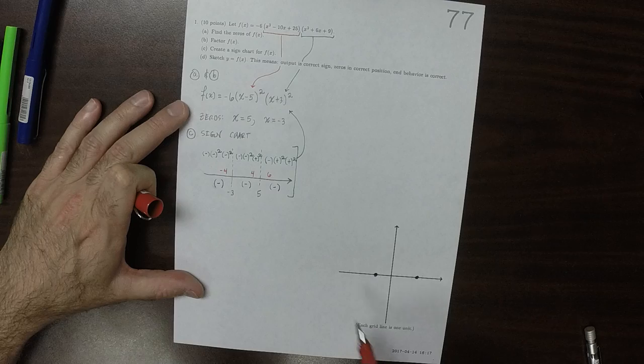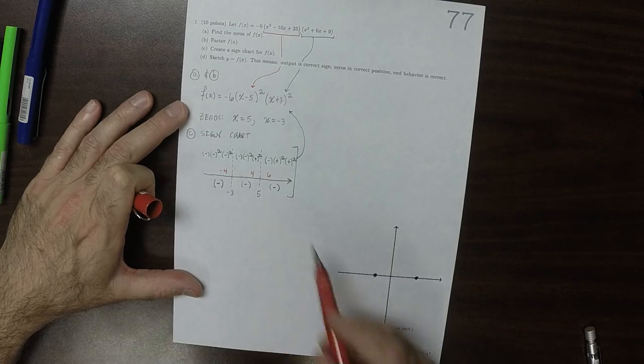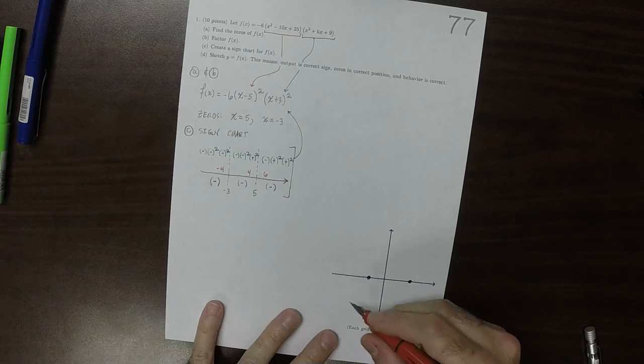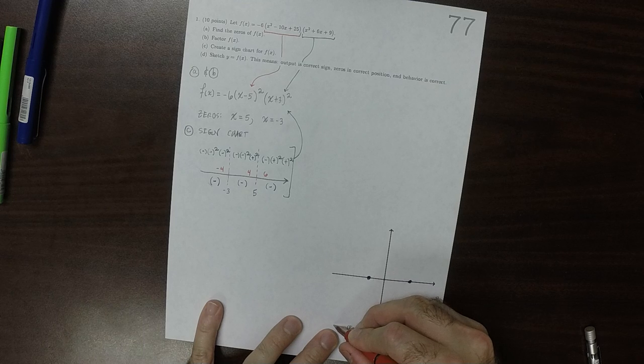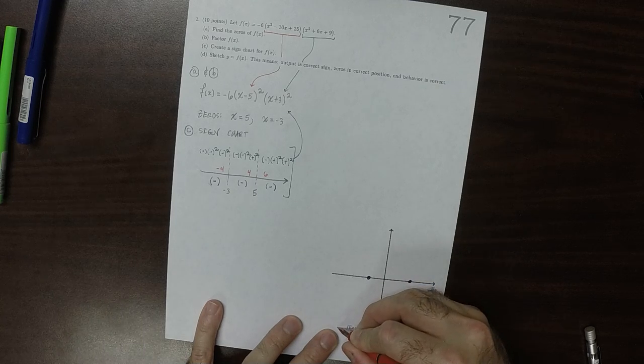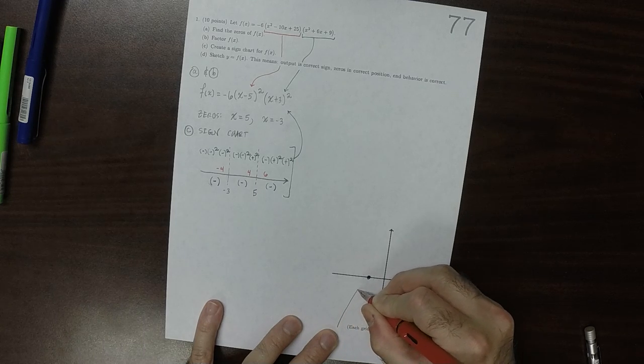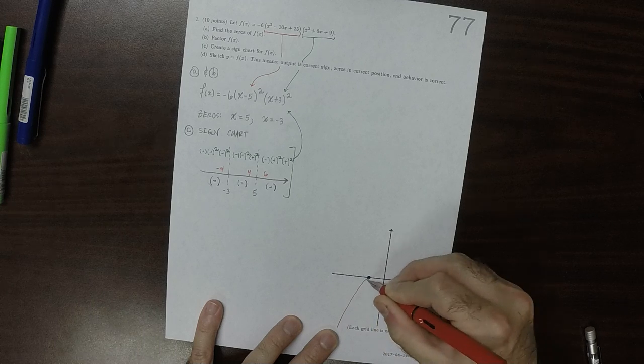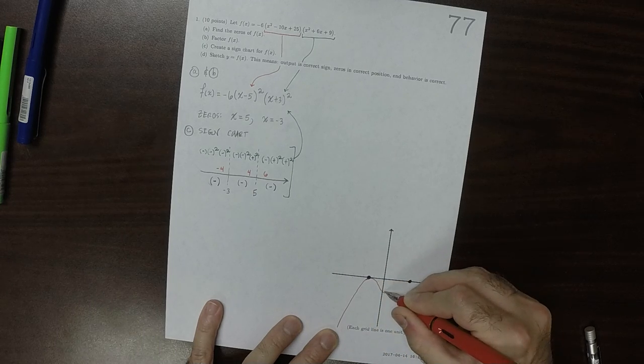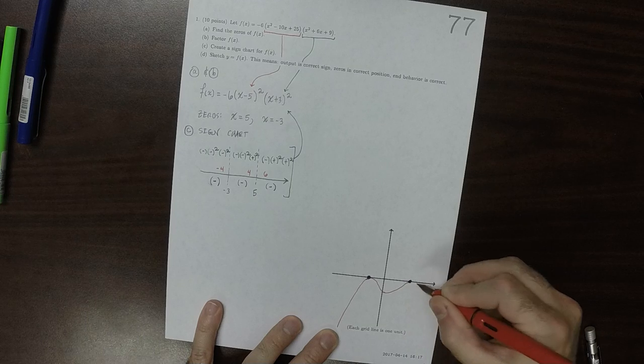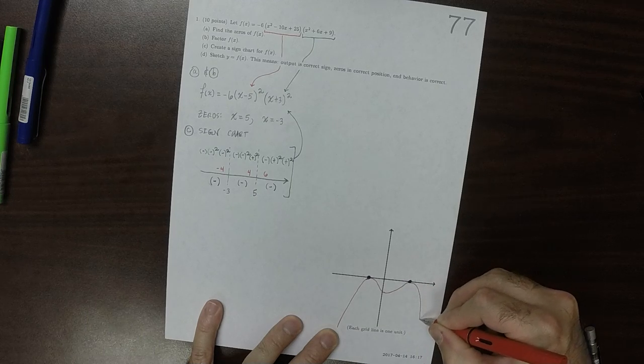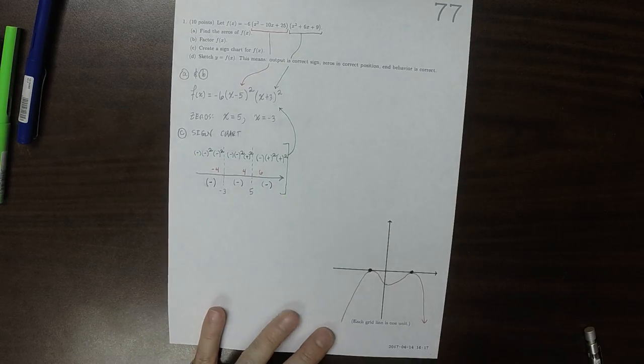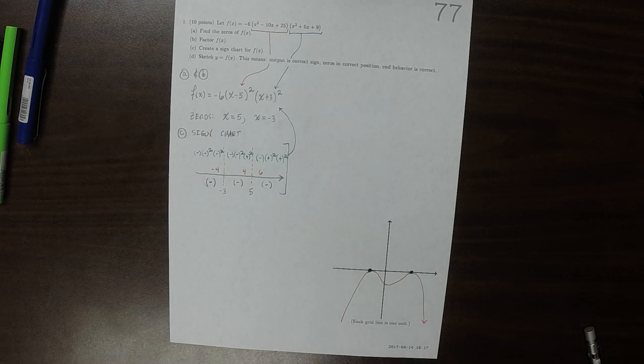And then go back down, and then come back up to this zero, and go back down. So the result looks something like this. And that's the answer.